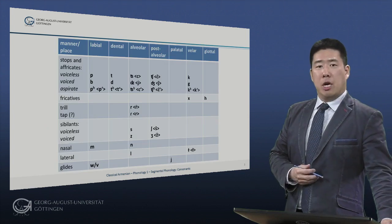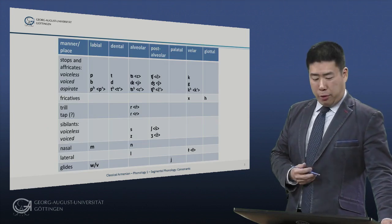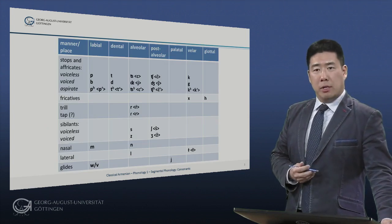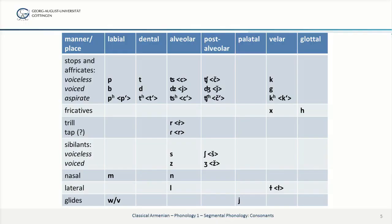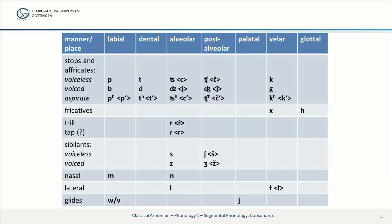Here is a table showing all 30 consonant phonemes of classical Armenian. As you see, the 15 stops and affricates are arranged as respectively voiceless, voiced, and voiceless aspirated.